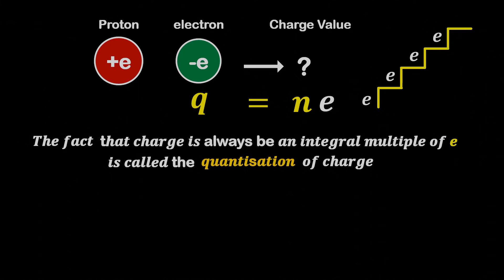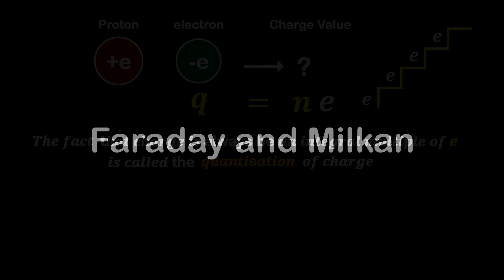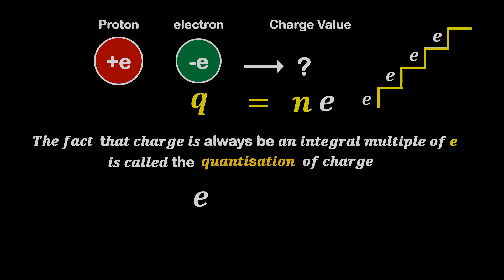Experimental observations by Faraday and Millikan have shown that an elementary charge particle e has a charge of 1.6 into 10 to the power minus 19 coulombs. We can also say that approximately 6 into 10 to the power 18 electrons are present in minus 1 coulomb charge.